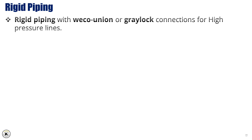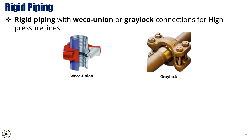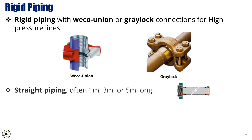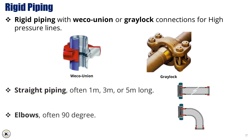Rigid piping with Weco Union or Greylock connections is commonly used for high-pressure lines, ensuring secure, leak-proof joints. Straight sections of rigid piping are usually available in lengths of 1 meter, 3 meters, or 5 meters, depending on the needs of the installation, providing a stable and durable flow path for high-pressure fluids. Elbows, often available in 90-degree angles, are used to change the direction of the piping, allowing for flexible routing in confined spaces or areas requiring specific alignment. These fittings are essential in maintaining the integrity and efficiency of the piping system in high-pressure applications.